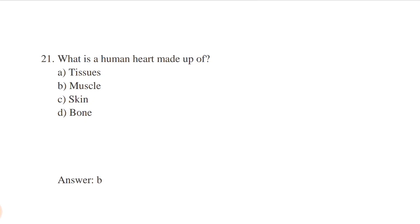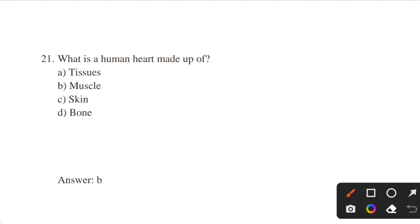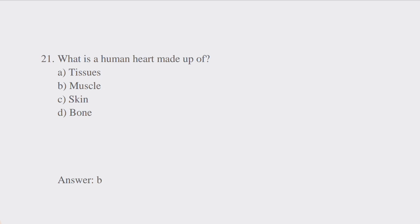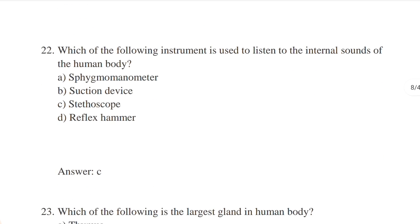What is the human heart made up of? Options: tissues, muscles, skin, bones. Answer: option B — muscles. The heart is made up of muscles; it is an involuntary organ. The muscles of the heart are called myocardium.